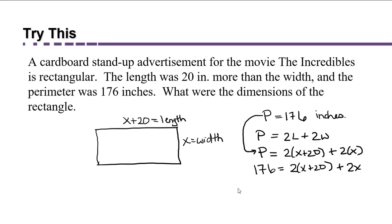Now if you're a little rusty with solving equations like this one, you should always distribute through any parentheses first. So we're going to have 176 equals 2 times x is 2x, and 2 times 20 is 40. And now we're going to combine like terms. That means that the terms that have x's, we're going to add their coefficients. So we have 176 equals 2x plus 2x is 4x plus 40.